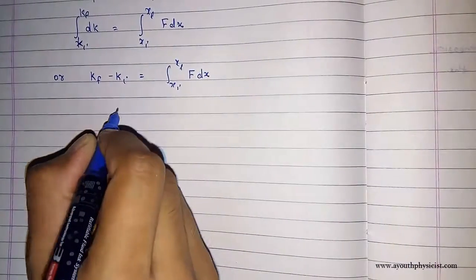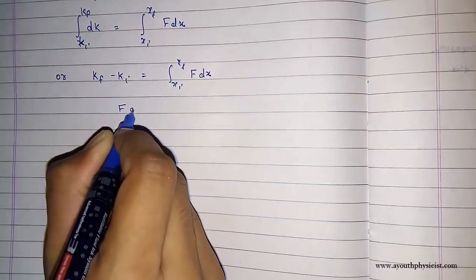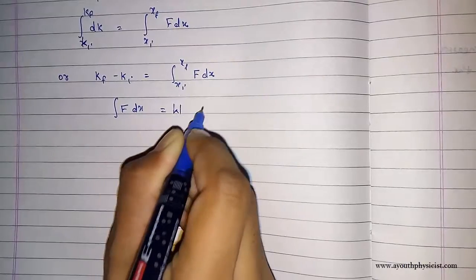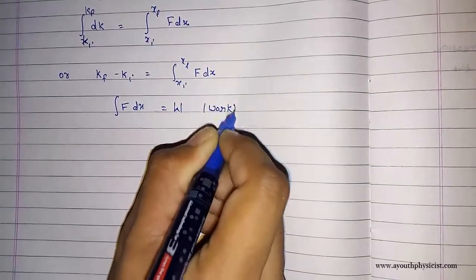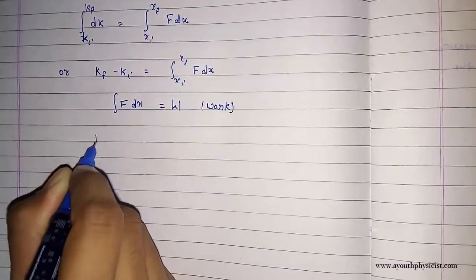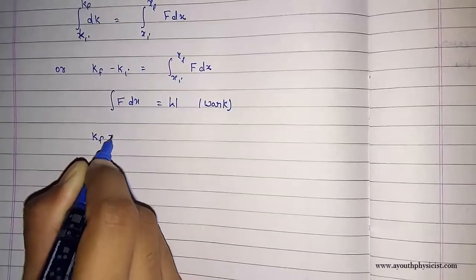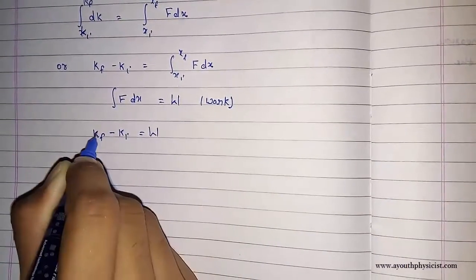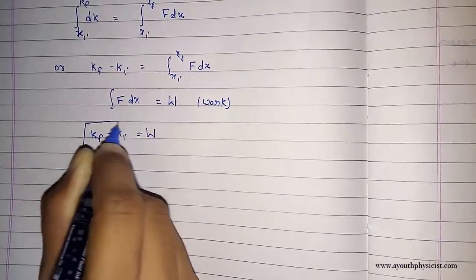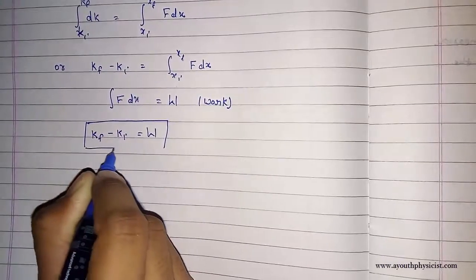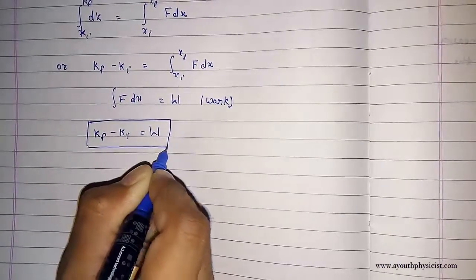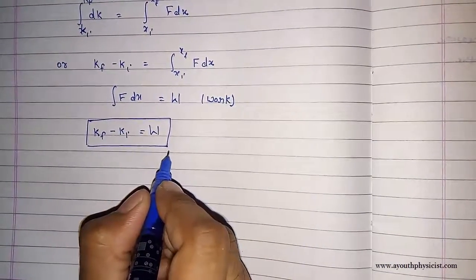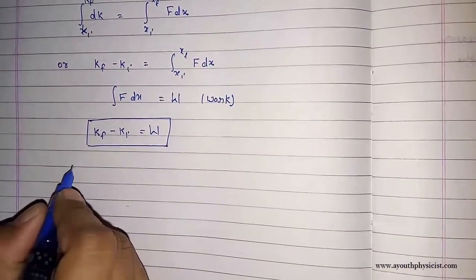We also know that the integration of f dx is work. So kf minus ki, that is k final minus k initial, is equal to work. Thus the work-energy theorem is proved for a variable force.